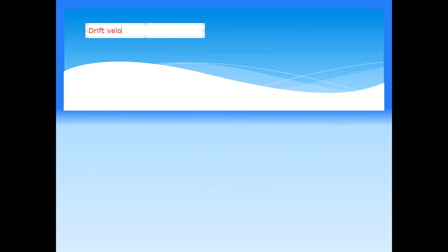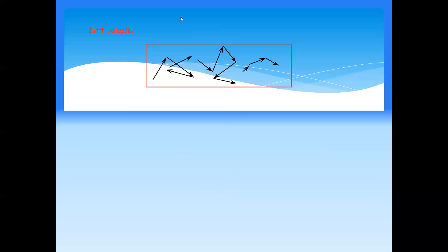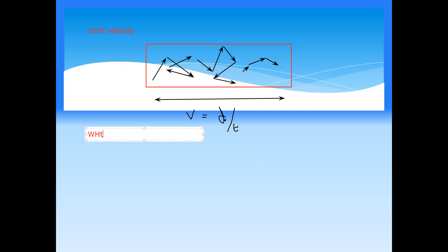Another important concept is drift velocity. Drift velocity is the displacement in unit time for the charge carrier. As mentioned, charges continuously change direction, but there is a net resultant direction. Displacement — from starting point to end point — divided by time gives the drift velocity. If temperature is increased, we must consider the effect on drift velocity: will it increase or decrease?